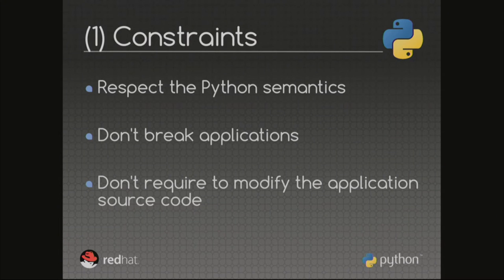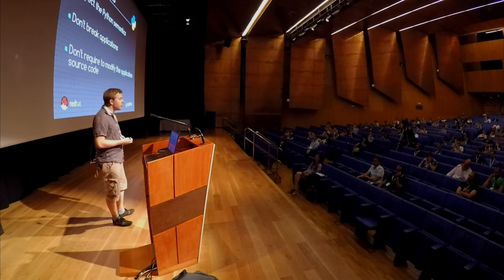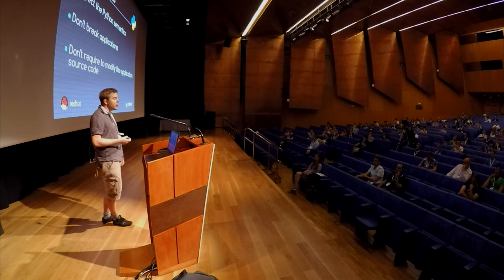So if you want to write a new optimizer, you have to respect some constraints. The first is to not change the Python semantics — that's really important for the Python community. Obviously, you should not break applications. A good property would be to not require modifying the source code, because I don't want something that requires putting decorators on functions. The idea is to optimize any kind of application, and I hope that if Python becomes faster, more people will use it.